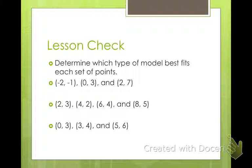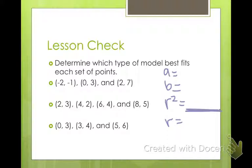I want you to do these three practice problems — determine which type of model best fits each set of data. You'll need to do a linear regression, a quadratic regression, and a cubic regression. There's one of each — hint hint. You'll also find a value called R-squared on your calculator. The closer R-squared is to 1, the better the fit is for the curve of the data points. We'll talk about R at the end of the year when we get to statistics.